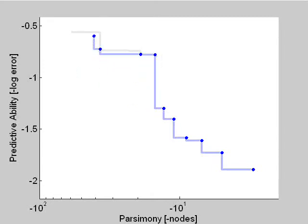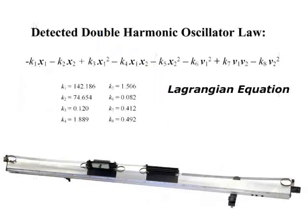Some equations on the Pareto front are accurate but complex, while others are simple but inaccurate. Equations we are most interested in lie between these two extremes.